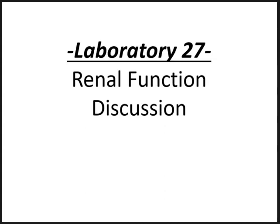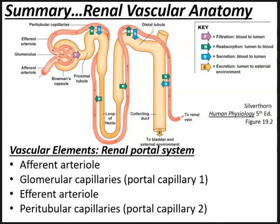Hey everyone, it's Dr. Mark Hahn and this is the discussion on Lab 27 renal function. Just a review of the renal vascular anatomy: there is a renal portal system involving the nephrons within the kidney. The afferent arteriole brings blood to the first part of the nephron, the renal corpuscle, made up of the Bowman's capsule and the glomerulus.